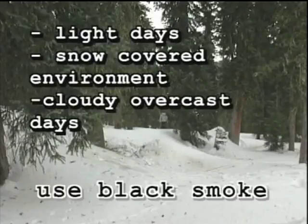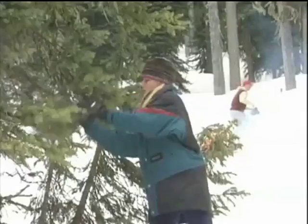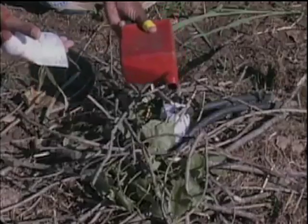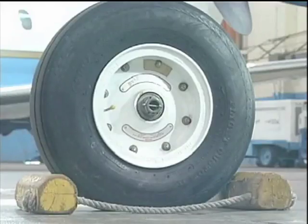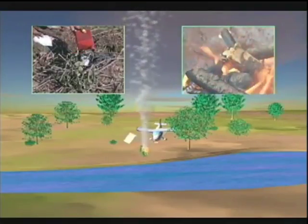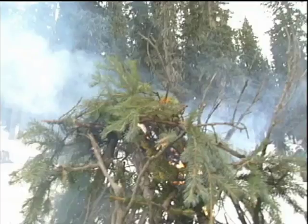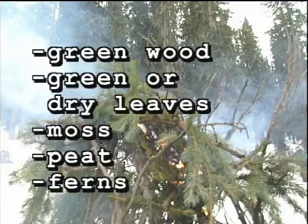In light or snow-covered environments and on cloudy overcast days, use black smoke. In a dark or forested area and on clear days, use white smoke. To produce black smoke, you should burn coniferous trees such as evergreens, any petroleum product such as JP4, hydraulic fluid, or oil, or any rubber or plastic-based items such as tires. Note: when burning any rubber or petroleum products, keep out of the smoke — it may contain toxic compounds. To produce white smoke, try burning green wood, green or dry leaves, moss, peat, or ferns.